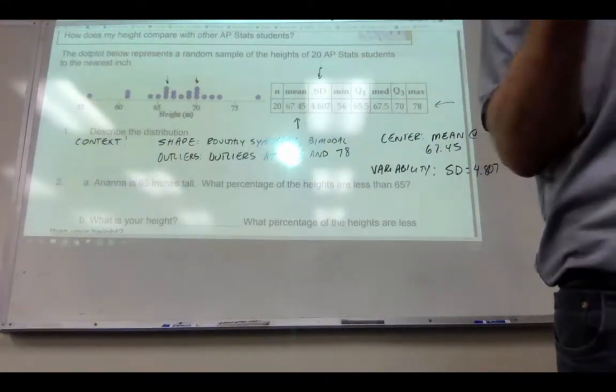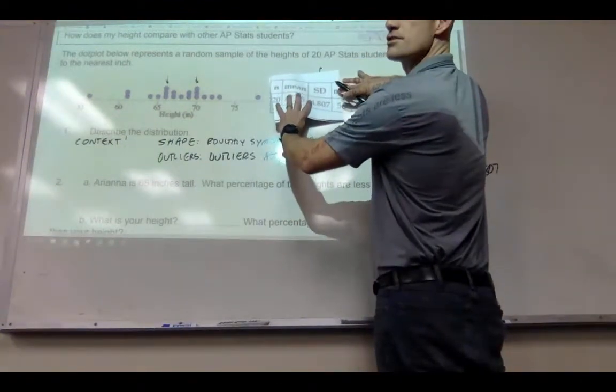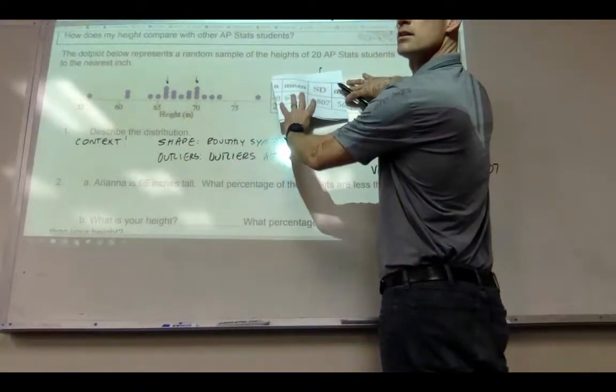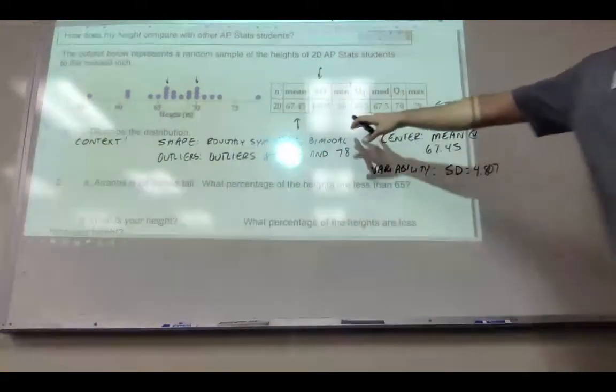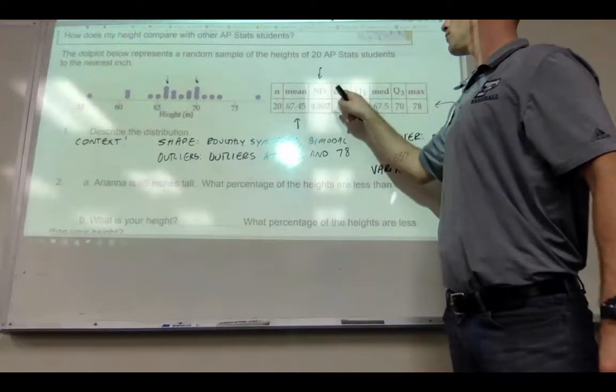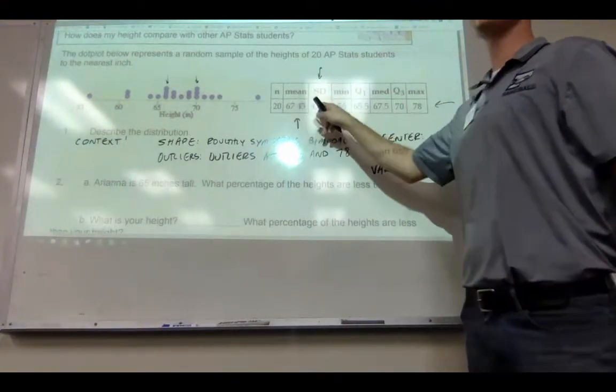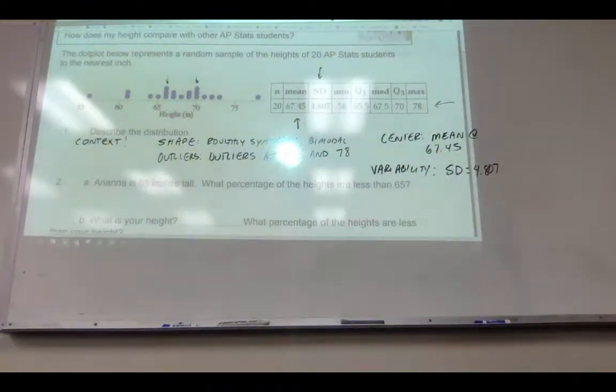If they give you the information, use it. If they didn't give you this and they just gave you the dot plot, your description would be a lot more generic. But because they give you this chart, which by the way is a 1, 2, 3, 4, 5 number summary plus mean and standard deviation, they give you all this info.